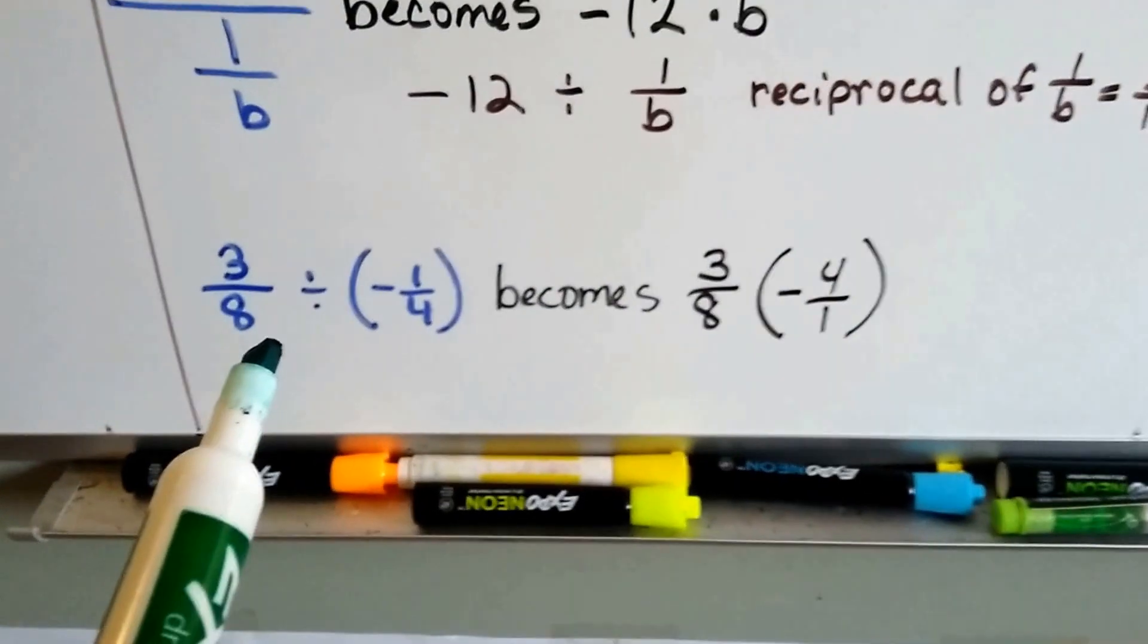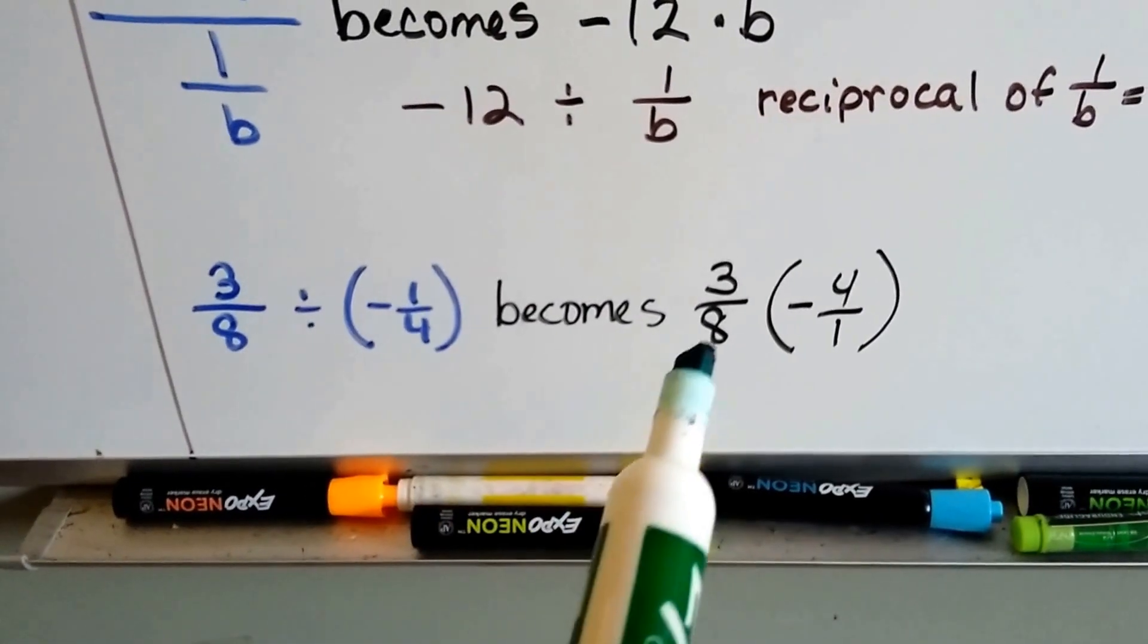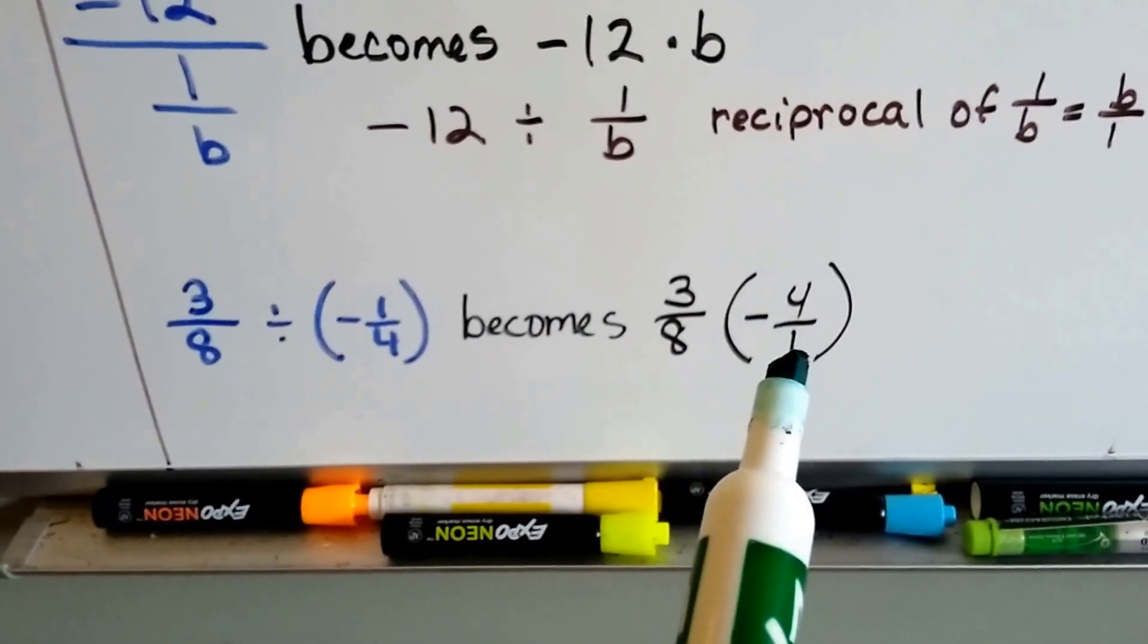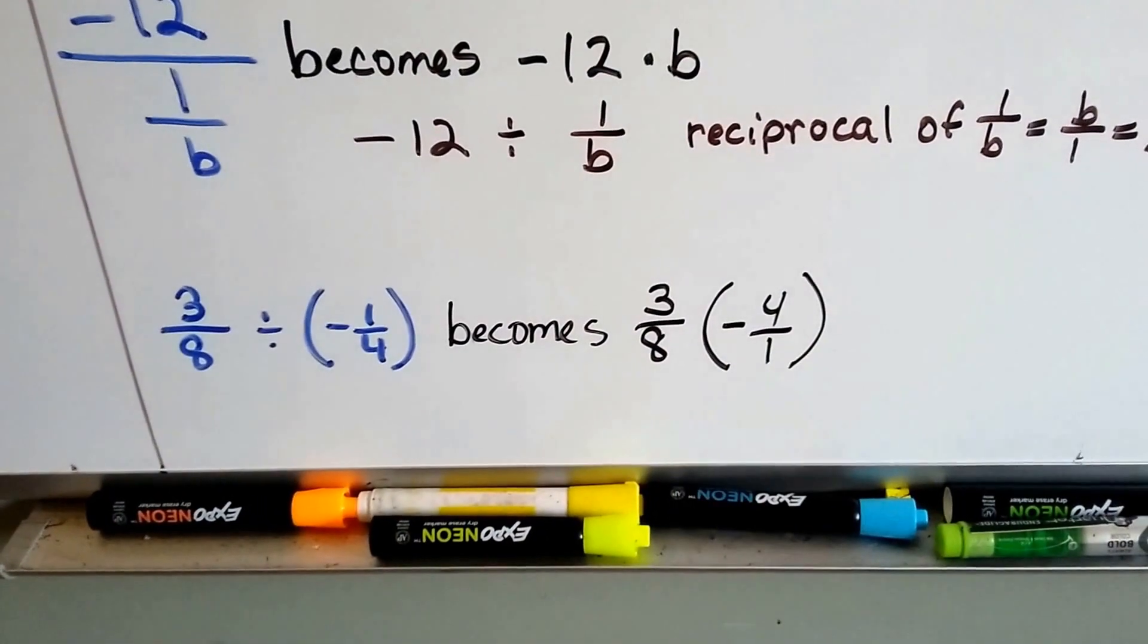And if we have 3 eighths divided by a negative 1 fourth, it becomes 3 eighths times negative 4 over 1. We flipped the numerator and the denominator.